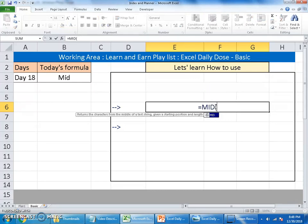I'll again choose this E2 as the text reference and here we need three arguments. Number one is the text, number two is the start number, number three is the number of characters.